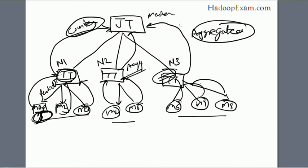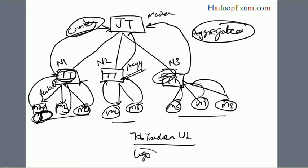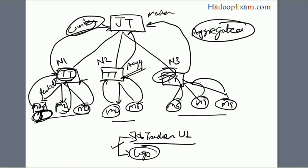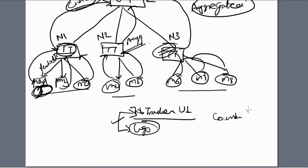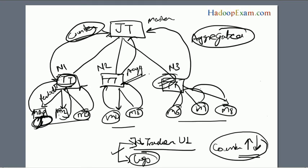Once all counter values are aggregated and your job is finished, the counter values become available in the job tracker UI and also in the logs of your job — you can see on screen how many map tasks executed, how many reduce tasks executed, and similar metrics. One interesting thing: while processing and aggregating, you may notice counter values going up and sometimes going down.